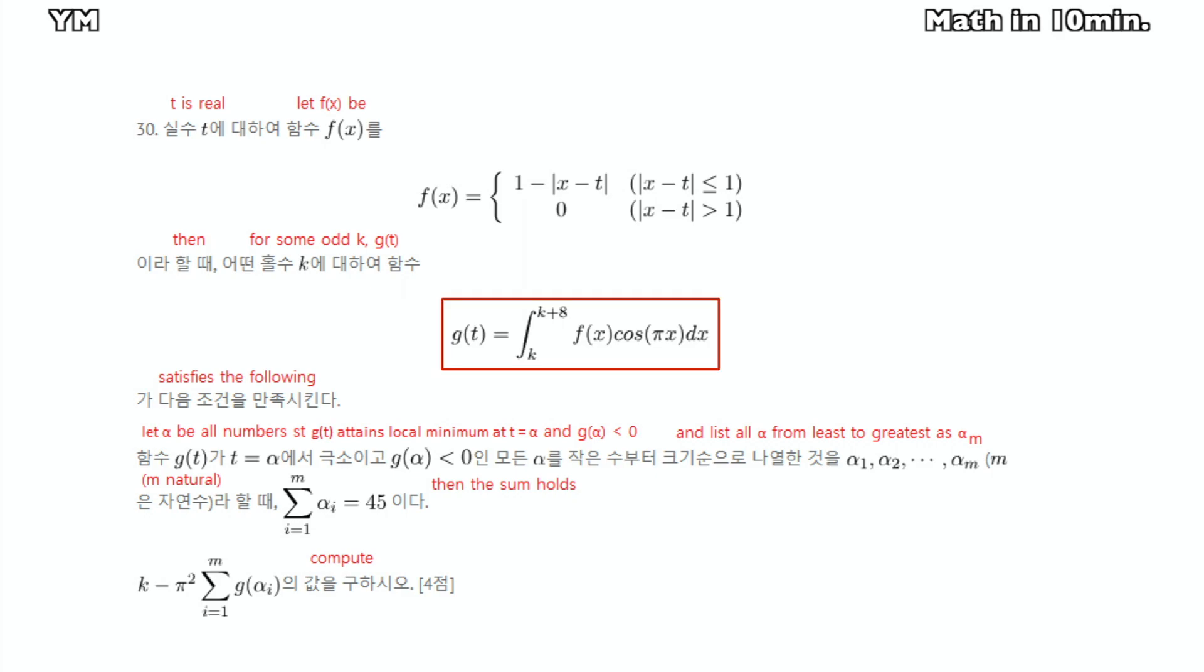The function gt is an integration of fx times cosine pi x from k to k plus 8. That is also equal to the area of multiples of fx and cosine pi x between x equals k and x equals k plus 8.